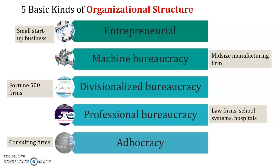The second one is machine bureaucracy — it is a mid-size manufacturing firm. The third one is divisionalized bureaucracy — this is for Fortune 500 firms, so you can browse what Fortune 500 firms are, the big companies. Then we have professional bureaucracy, which usually applies to law firms, school systems, and hospitals — any professional work. The last one is adocracy, which is most probably about consulting firms.